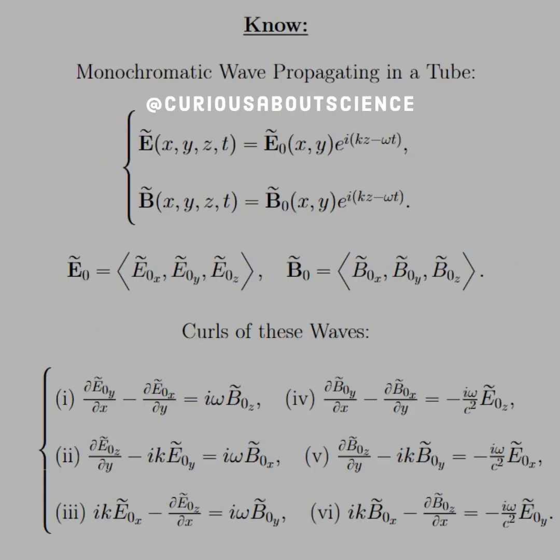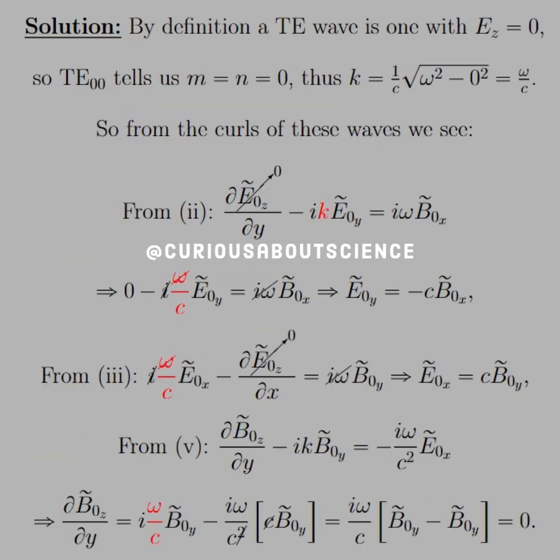Again, monochromatic wave propagating in the tube. We saw this last question. The curl of these waves, we saw how they were derived in the last question, and how they interact with one another. So if we have the curl of E is equal to B, if we have the curl of B to get to 1 over c squared partial E with respect to t, again, all the equations we know we need.